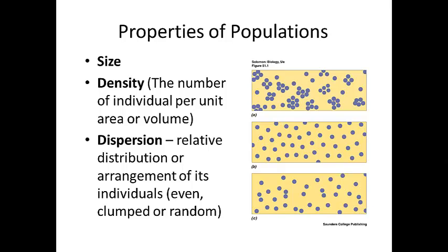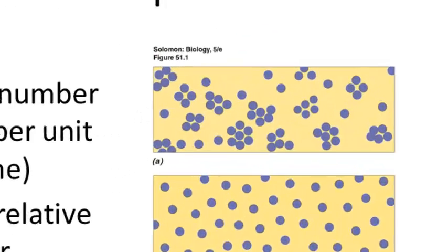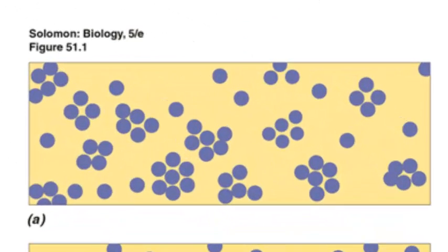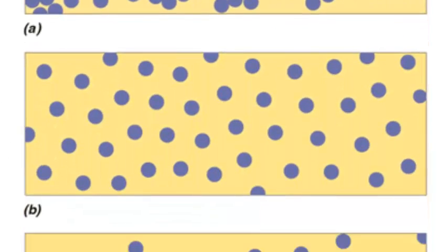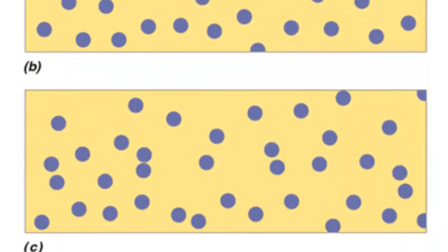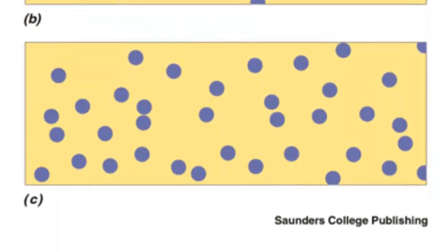Dispersion is another factor. This is how the members of the population are distributed — how they're arranged. There are three different types: clumped, which is the most common; even; and random.